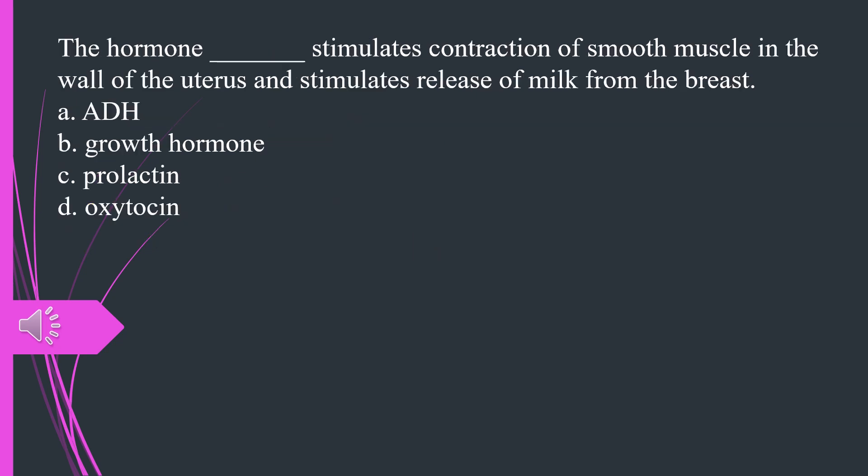What hormone stimulates the contraction of smooth muscle in the wall of the uterus and stimulates release of milk from the breast. A. ADH B. Growth hormone C. Prolactin D. Oxytocin. The answer is D, oxytocin.